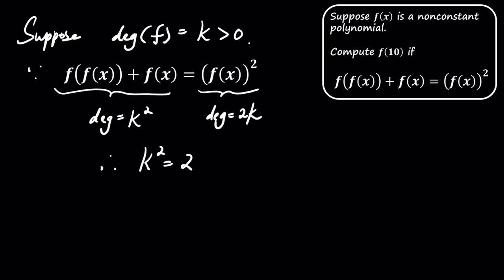By equating the degrees of both sides, we get k squared equals 2k, which gives us k equals 2 since f of x is non-constant. Therefore, f of x is a quadratic polynomial.